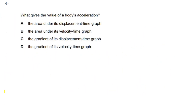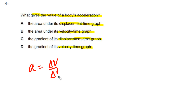For this question we need to find out what gives the value of a body's acceleration — how we can find acceleration if a displacement-time graph or a velocity-time graph is given. We need to understand how we can find acceleration of a body from a graph. Acceleration is simply equal to delta v over delta t, or the rate of change of velocity.